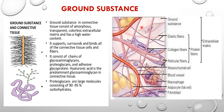The ground substance, one of the basic components of connective tissue, consists of an amorphous, transparent, colorless extracellular matrix with a high water content. It supports, surrounds, and binds all connective tissue cells and fibers. The consistency of the ground substance determines how much the connective tissue permits passage of nutrients. Its composition varies in different types of connective tissue and consists mainly of glycosaminoglycan chains, proteoglycans, and adhesive glycoproteins. There is hyaluronic acid as the predominant glycosaminoglycan. These proteoglycans are large molecules consisting of 90 to 95 percent carbohydrates.